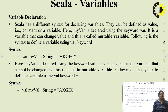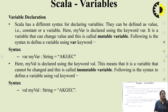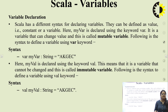Next is Scala variables. Variables are reserved memory locations to store values. When you create a variable, you reserve some space in memory. Based on the data type of a variable, the compiler allocates memory and decides what can be stored in that reserved memory. By assigning different data types to variables, you can store integers, decimals, or characters in these variables.